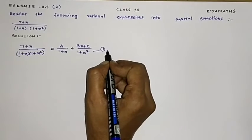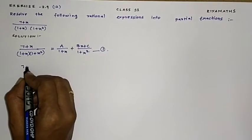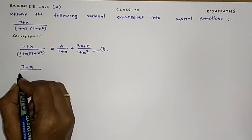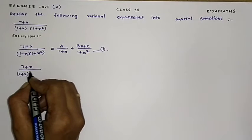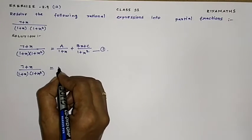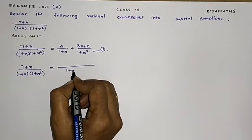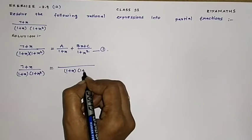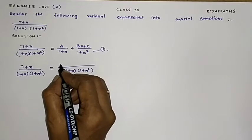Let us take equation number 1. Taking LCM: 7 + X over (1 + X)(1 + X²) equals, the LCM is (1 + X)(1 + X²), so we have: